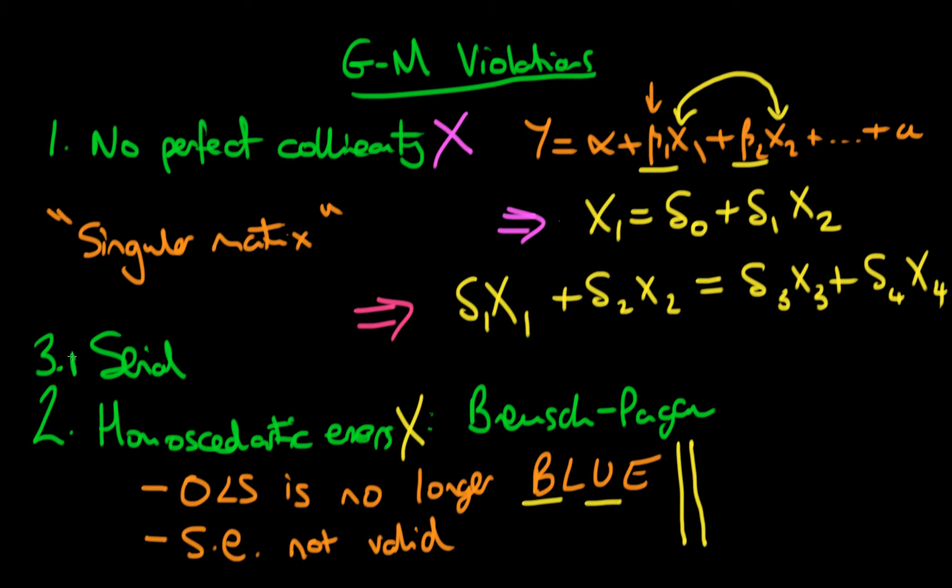The third Gauss-Markov condition which we're going to talk about here is that of no serial correlation amongst errors. So by having no serial correlation amongst errors, we know that OLS is BLUE. And actually, if we do have a violation of this particular condition, the reason I've lumped two and three together is that if I have a violation of three,